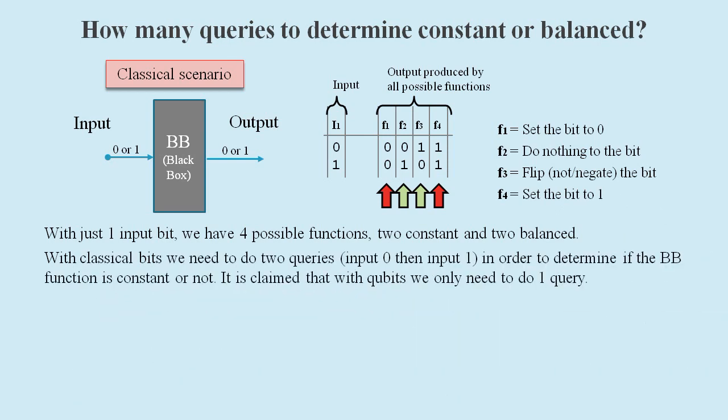Now computational performance is related to how many queries we need to do in order to determine if the function in the black box is constant or balanced. With classical bits we need to do two queries. We need to try inputs of both zero and one in order to determine if the black box function is constant or not.